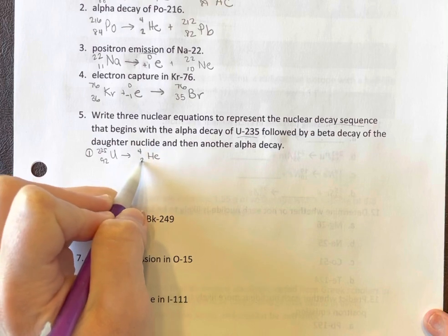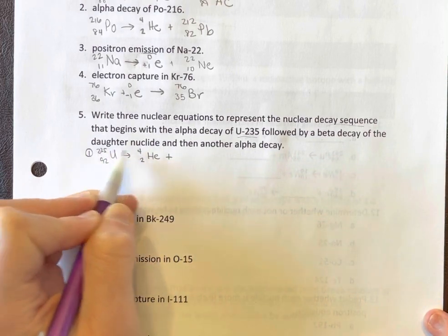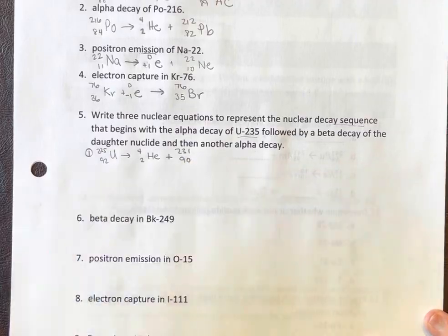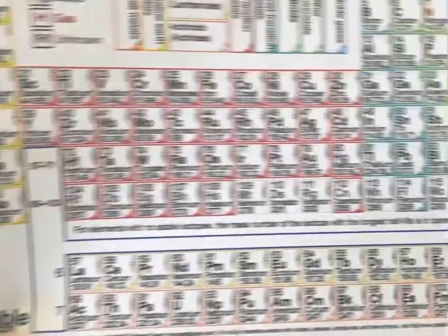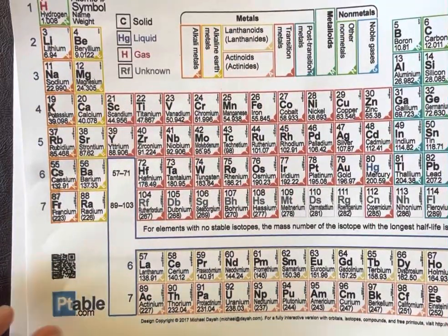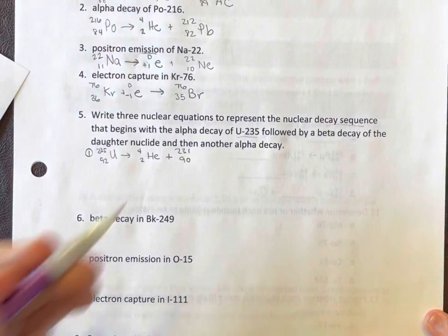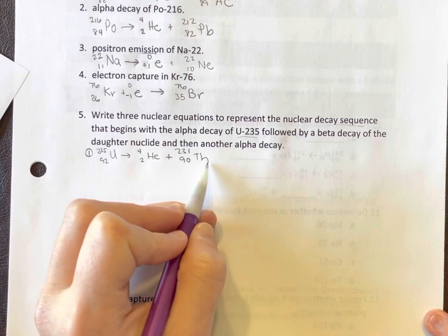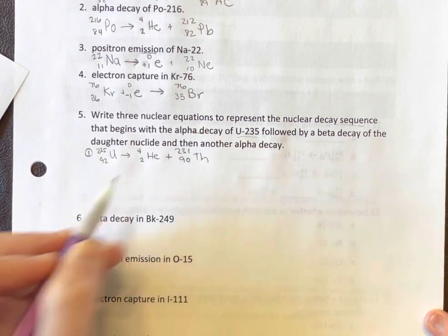Alpha decay, that's a helium atom. Here's our product. So that's 231 and 90. The periodic table number 90 is thorium. Okay, this is the daughter nuclide. So we did the alpha decay.